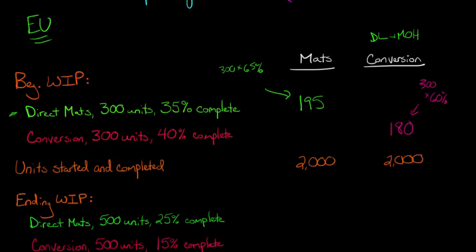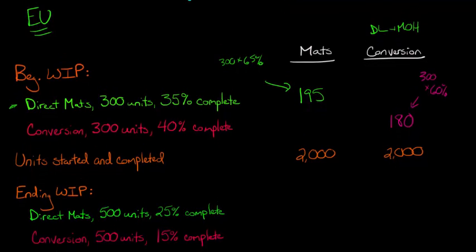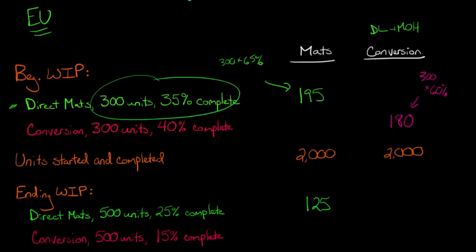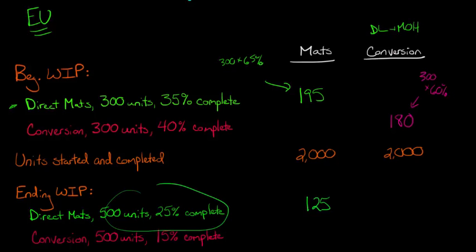Now we need to look at what is in our ending work in process. We've got 500 units that we end with, and they're 25% complete with respect to direct materials. So we multiply 500 by 25%, which gives us 125. Notice this is different from beginning WIP: up there we multiplied by the incomplete percentage because we wanted to know what was left to be done. But for ending work in process, we want to know what we've done so far — so we multiply 500 by 25% to get 125.